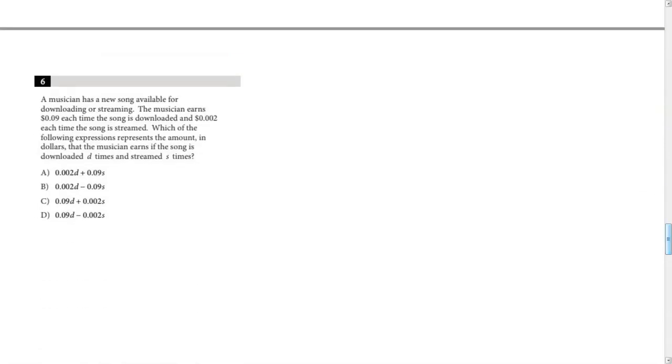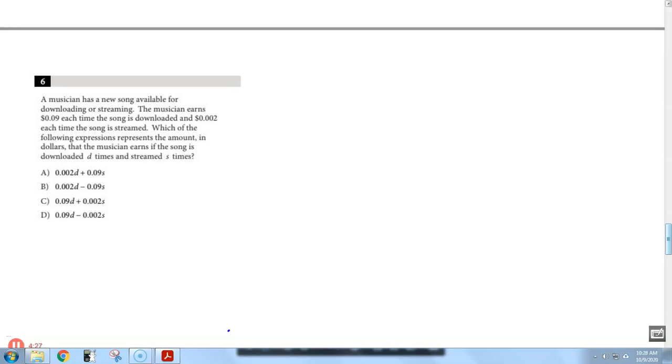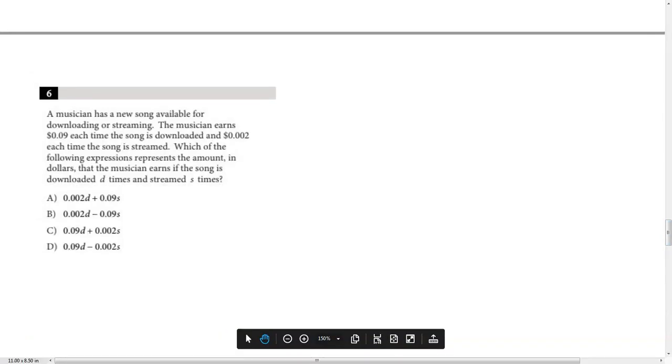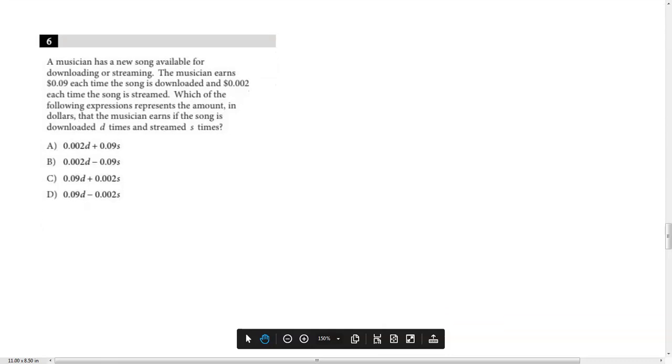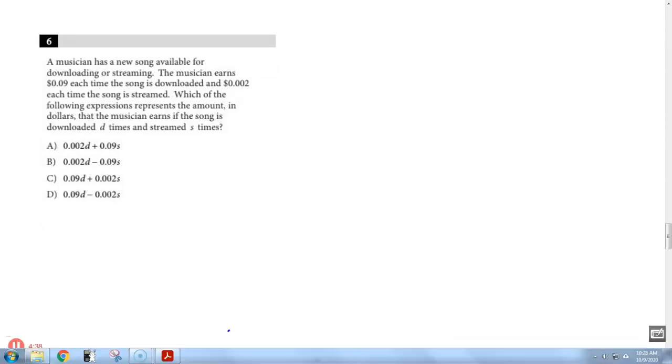Number six, a musician has a new song available for downloading or streaming. Let me see if I can maybe blow this up just a little bit bigger. Seems a tad small. There we go. So, and it says the musician earns nine cents each time it is downloaded. So nine cents multiplied by every time it's downloaded. And then 0.002 cents every time it is streamed. And download was D, streamed as S. So, right there is going to be the equation. Whenever they say each time or per, you know it's multiplication. So the correct answer here will be C.